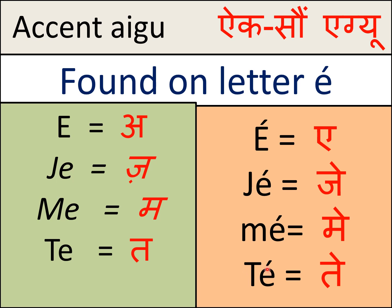Let's read them together: a, e — ja, je; ma, me; ta, te. So this is the accent aigu. It only changes the sound of the letter 'e.'